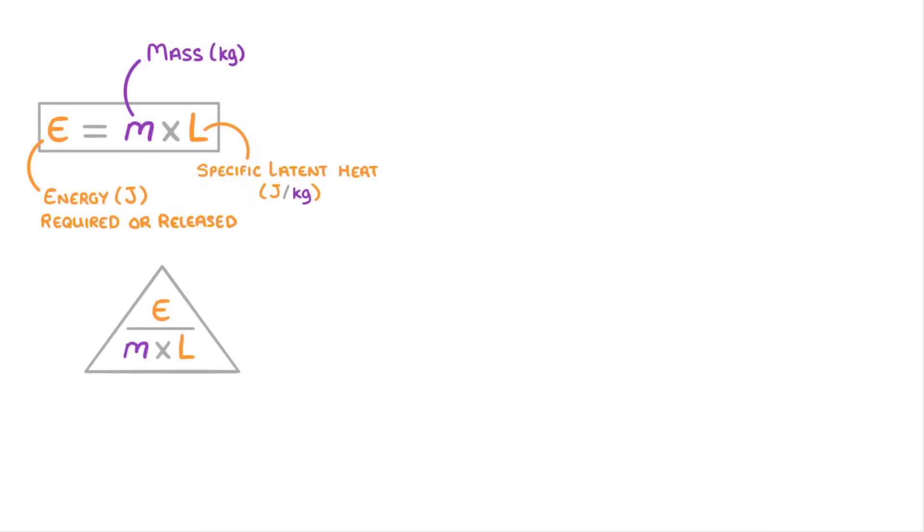The last thing we need to look at is the equation for specific latent heat, which says that the energy that's required, or released, is equal to the mass of the substance times the specific latent heat. You can also use this formula triangle if that's easier.